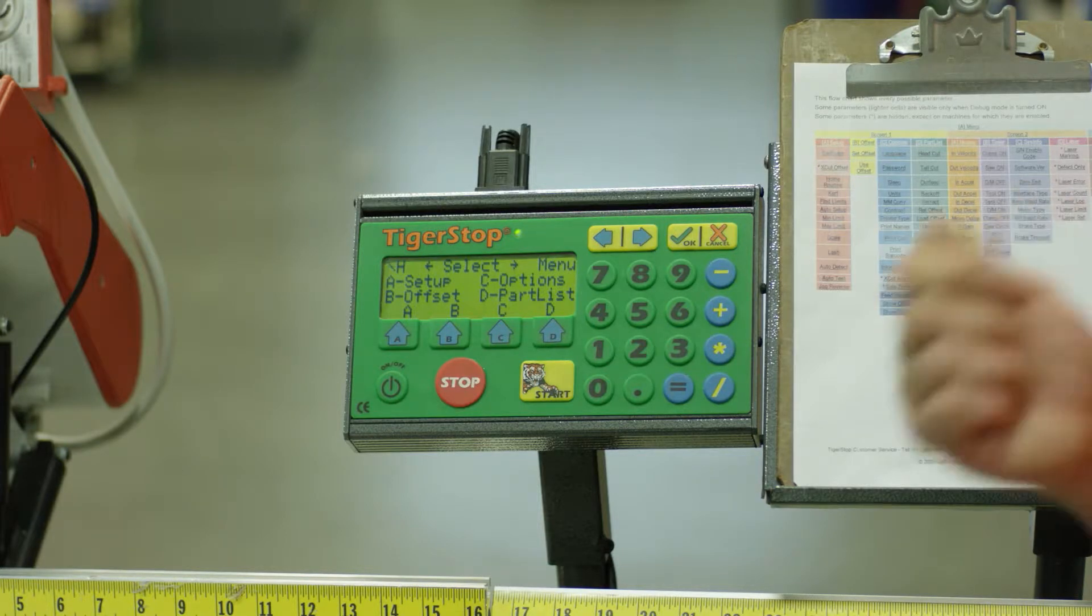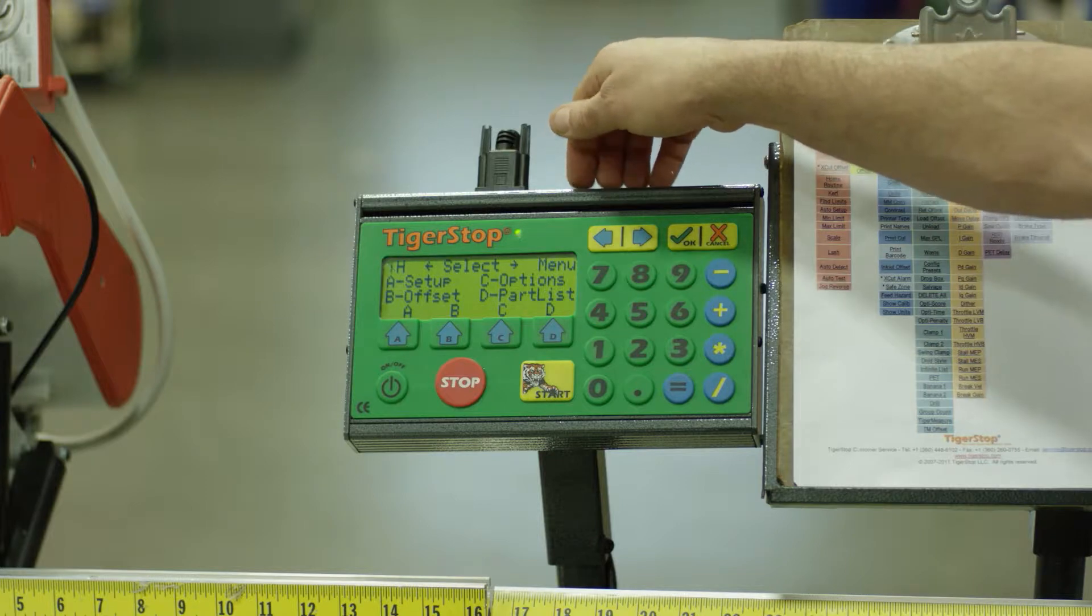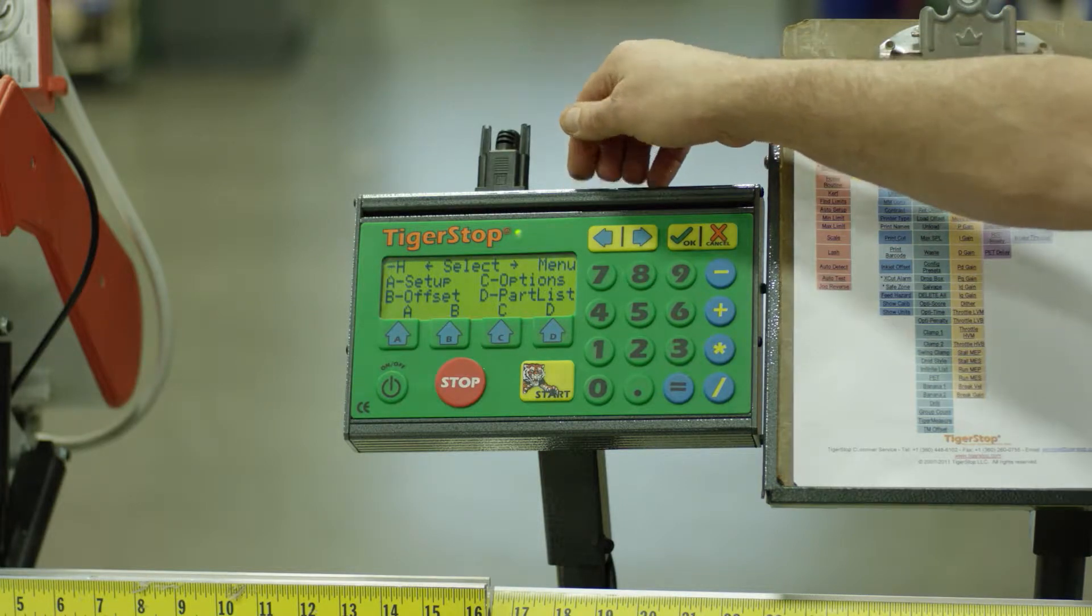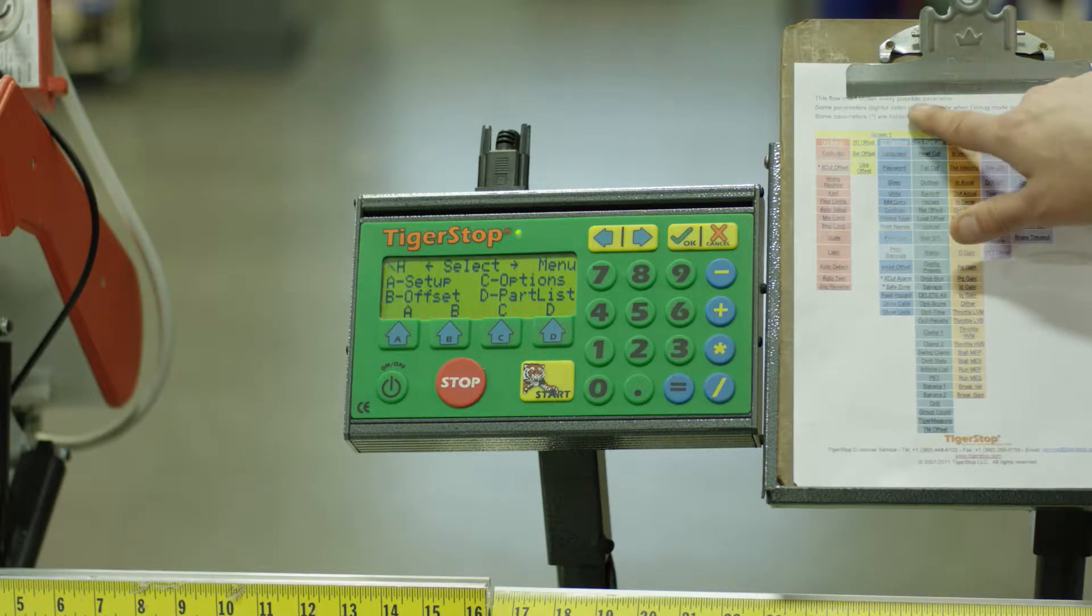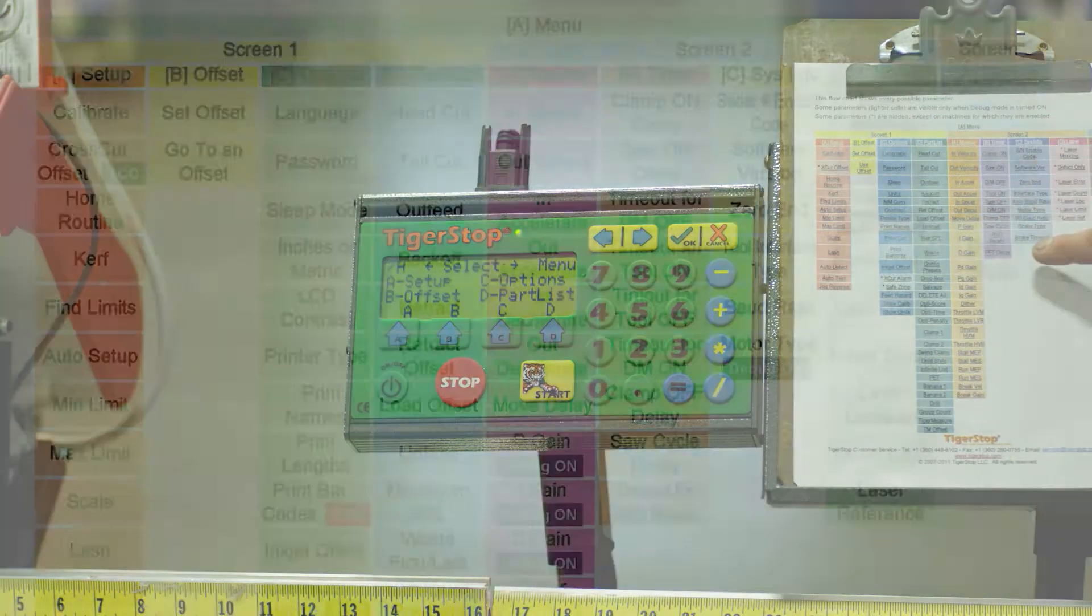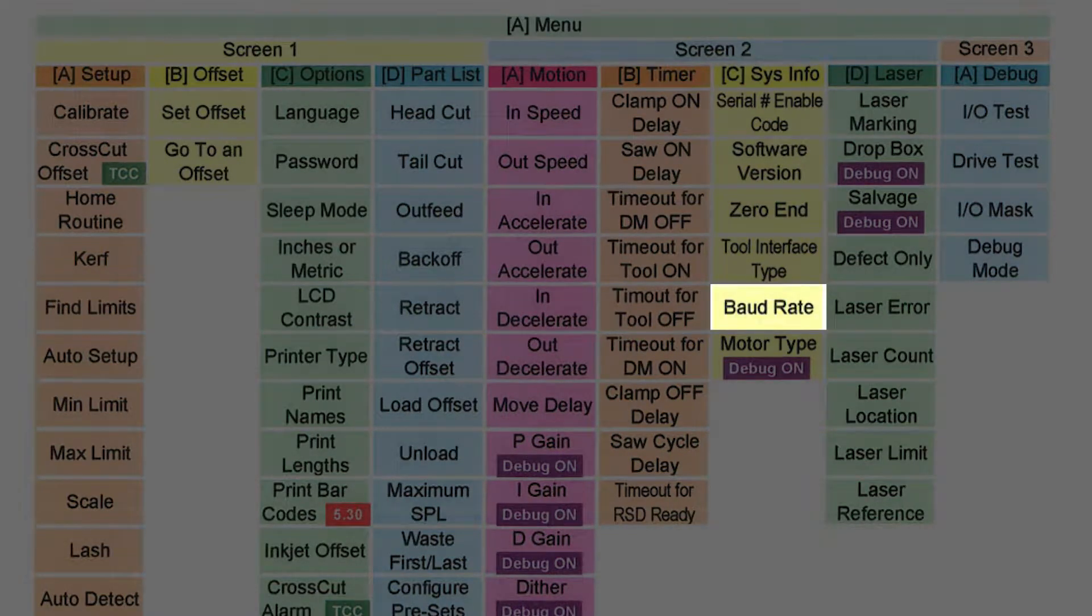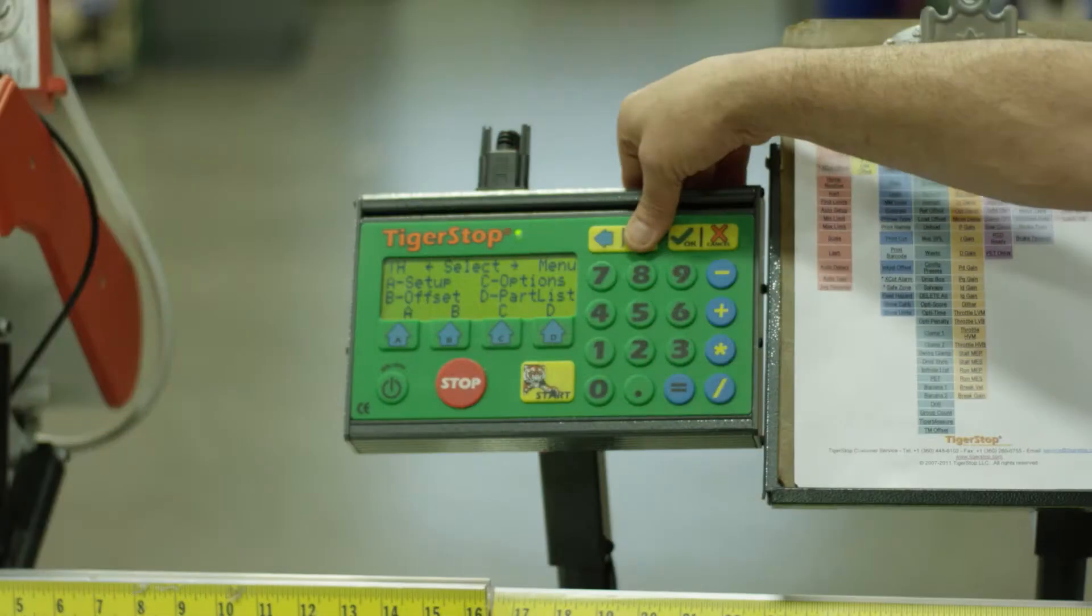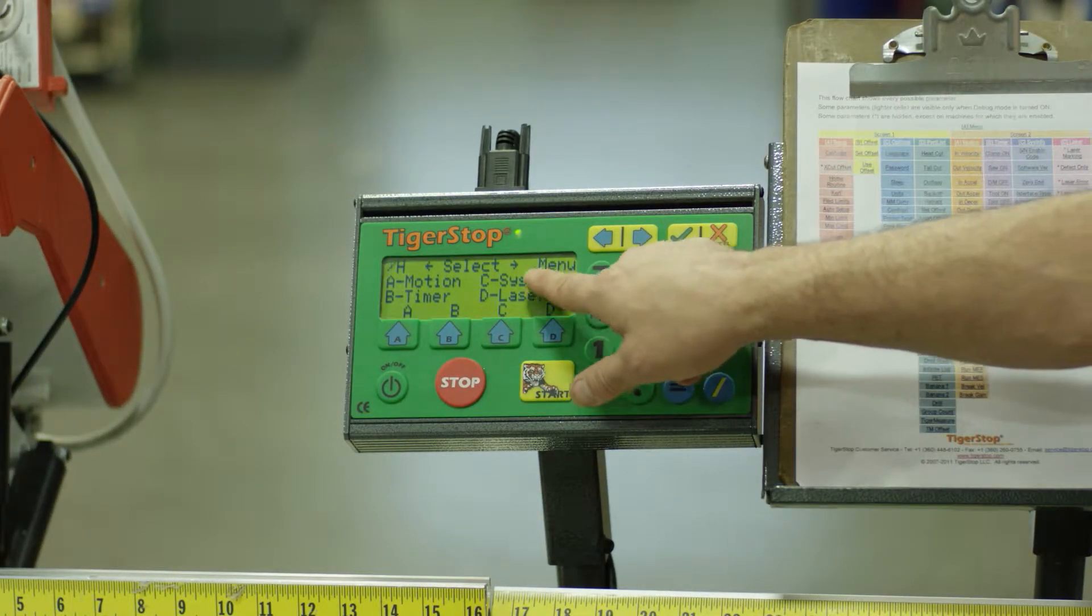One of the items that you may be required to change as you are upgrading or adding your Tigerstop into your factory system would be the baud rate. I'm going to refer to my menu flow chart to find where my baud rate is. My baud rate is under menu number two, screen number two. So I'm going to right arrow.